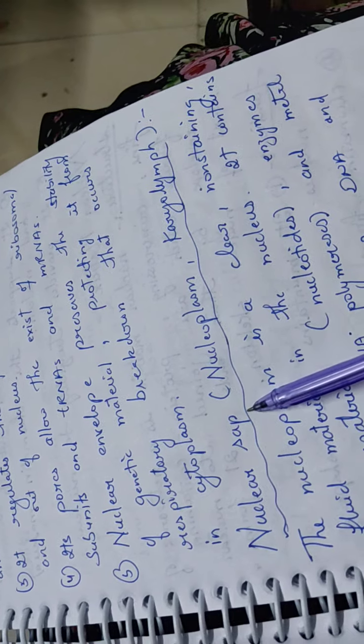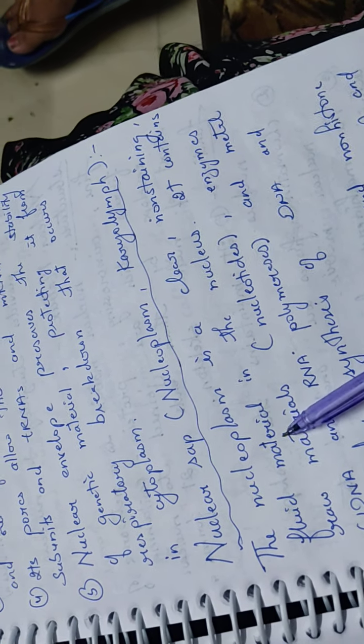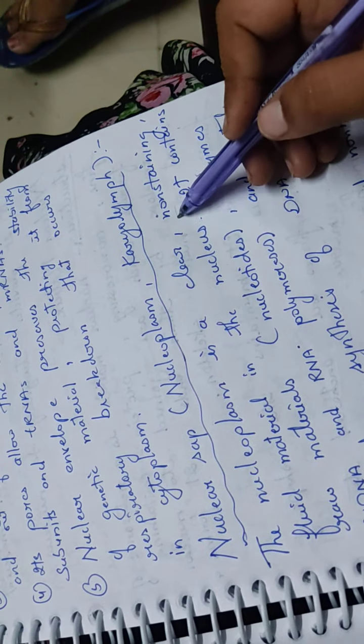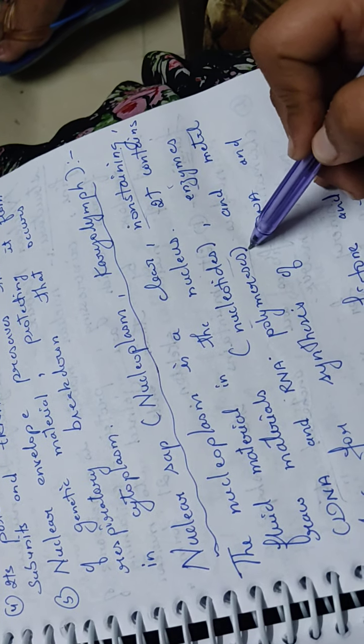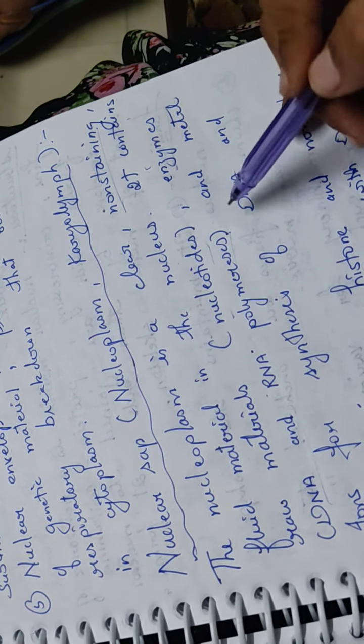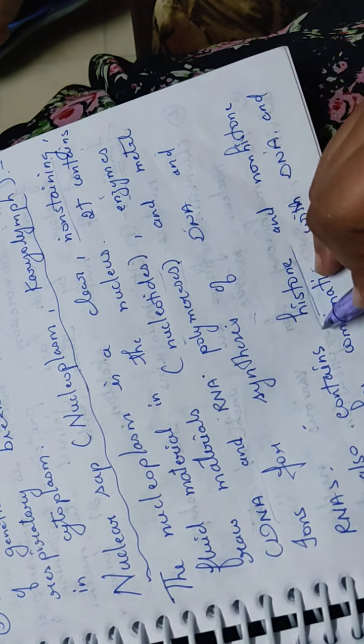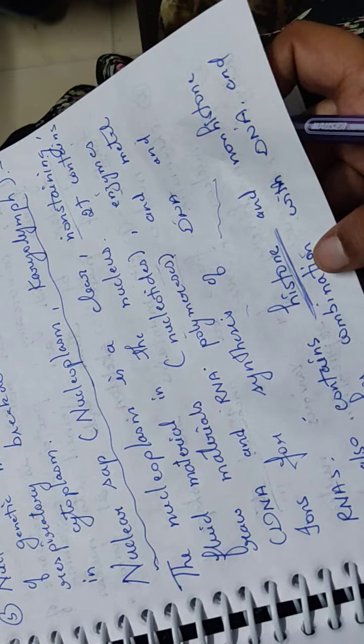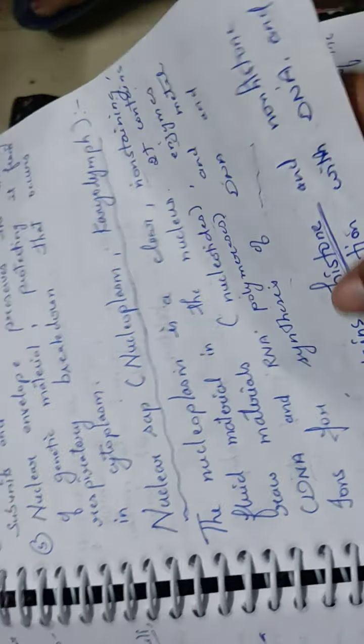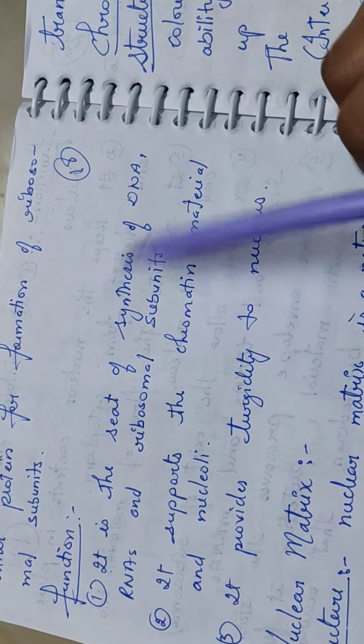Nuclear sap or nucleoplasm, also called karyolymph. Nucleoplasm is a clear, non-staining fluid material in the nucleus. It contains raw materials like nucleotides, enzymes like DNA and RNA polymerase which help make and repair DNA and RNA, and metals like iron. It also contains histone and non-histone proteins. Histone proteins help pack DNA into a compact form, providing packing of DNA in the nucleus.